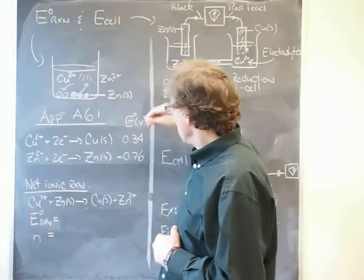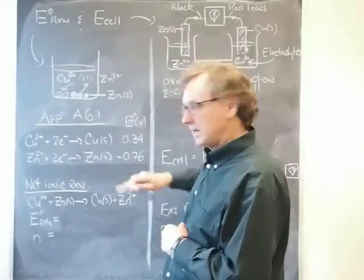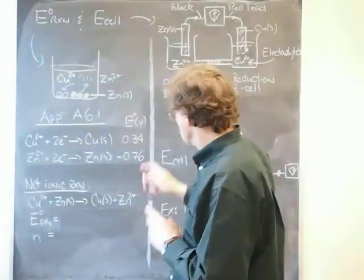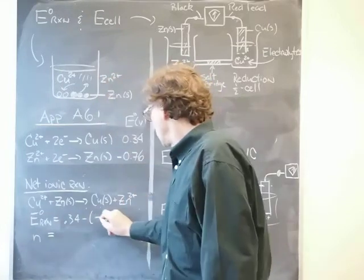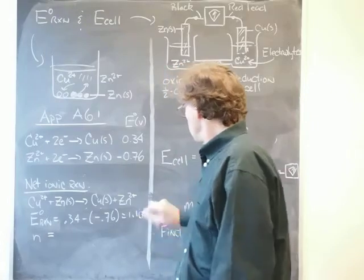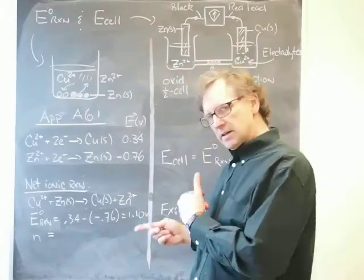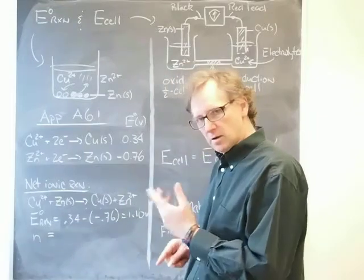E naught of the reaction is E naught of the reduction half reaction minus E naught of the oxidation half reaction. So that will be 0.34 minus a minus 0.76, which equals 1.10 volts. Two electrons trade hands, so N equals 2.